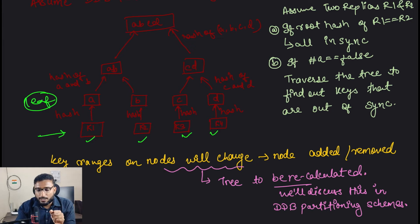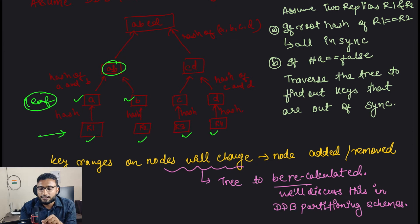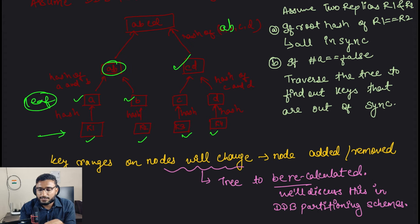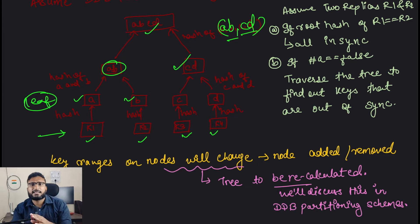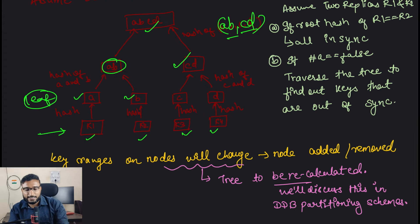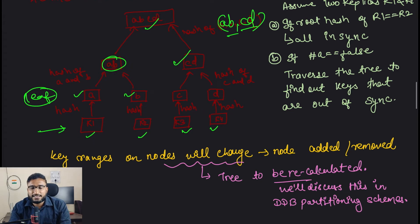When traversing bottom-up, you combine hashes A and B and take the hash of that combination, getting AB. Similarly you combine C and D to get CD. Then finally you take the hash of AB and CD to get ABCD, which is the root hash of the entire tree.